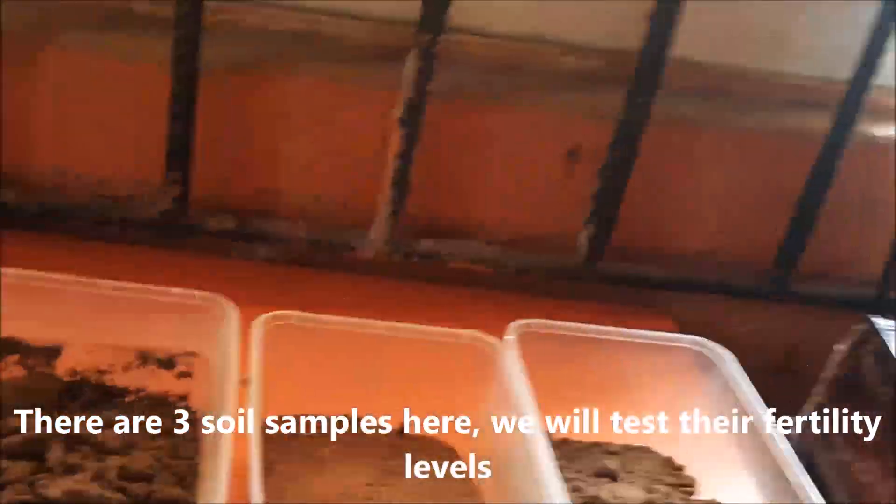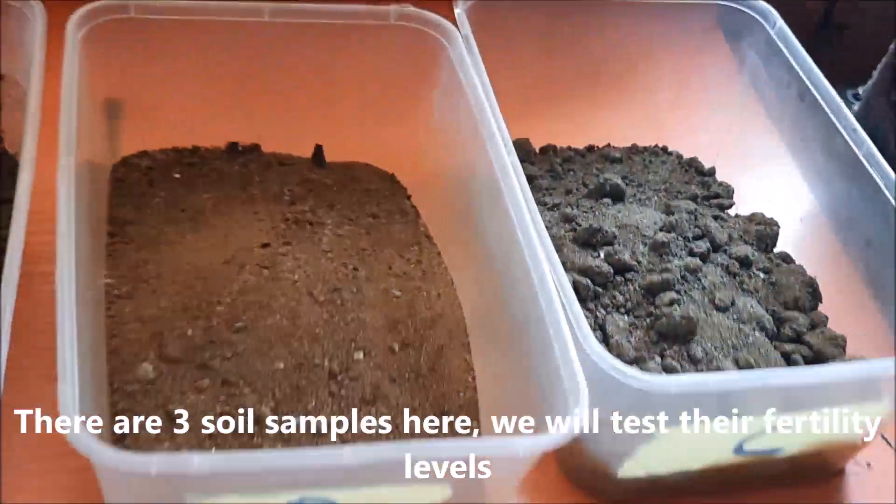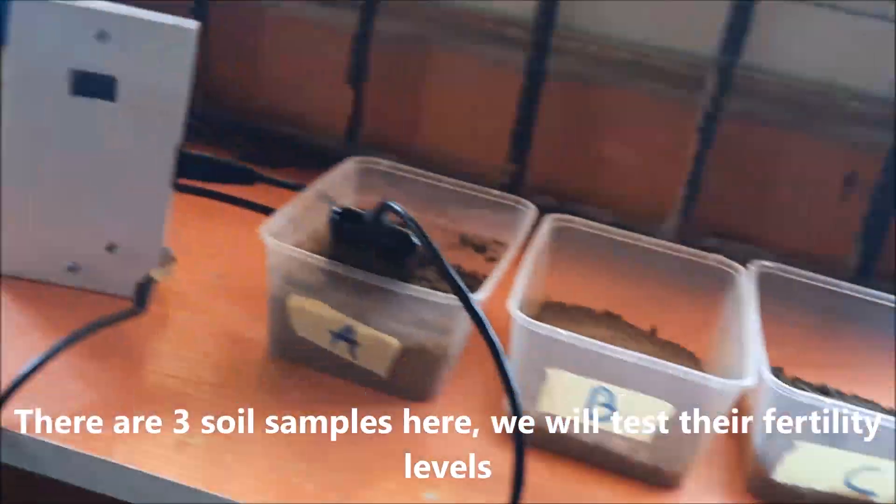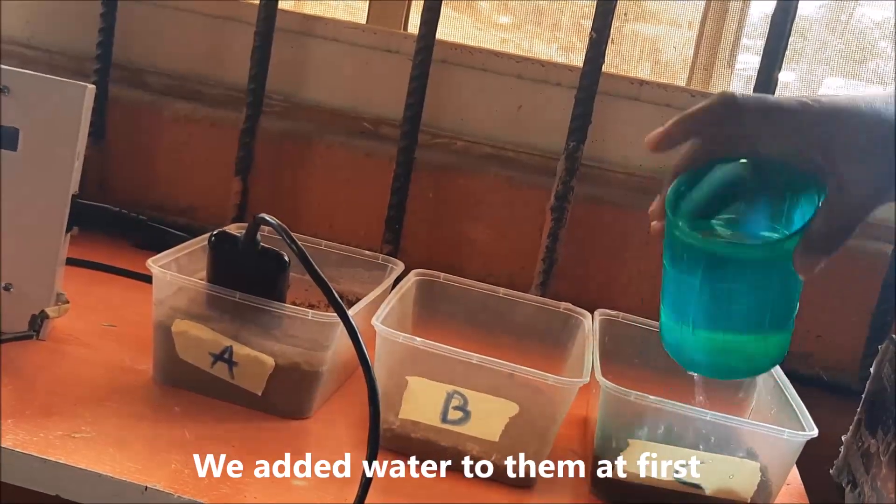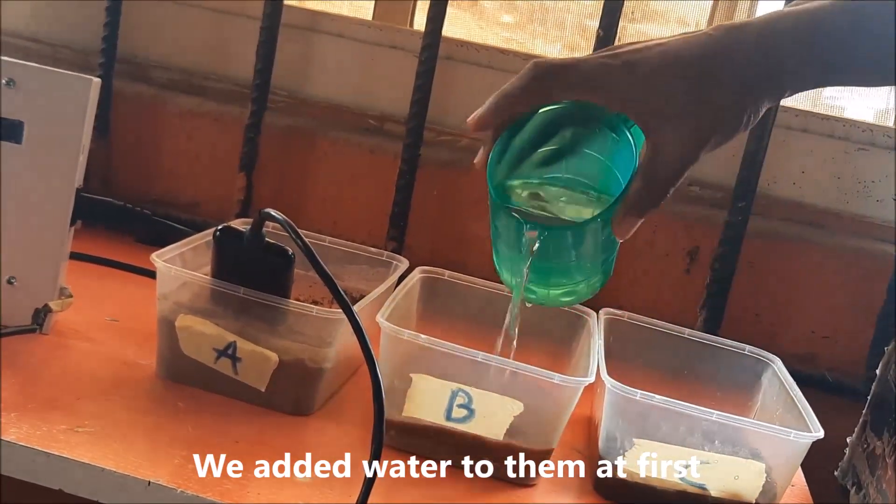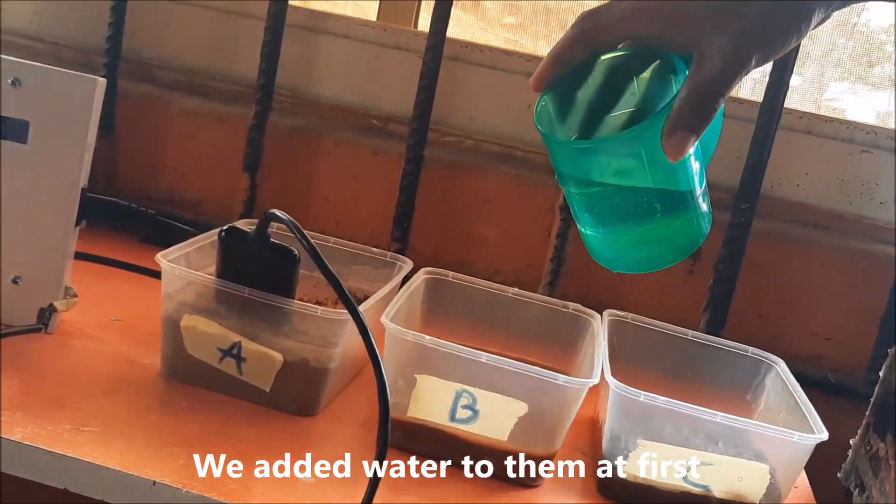There are three soil samples here. We will test their fertility level. We added water to them at first, and once they are partially or wholly soaked we can insert the sensor probe inside.